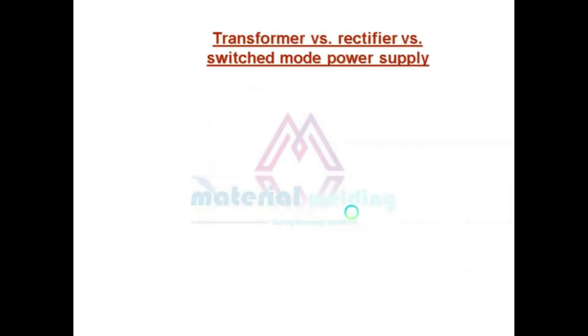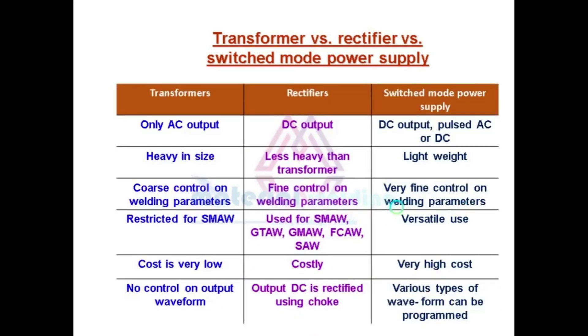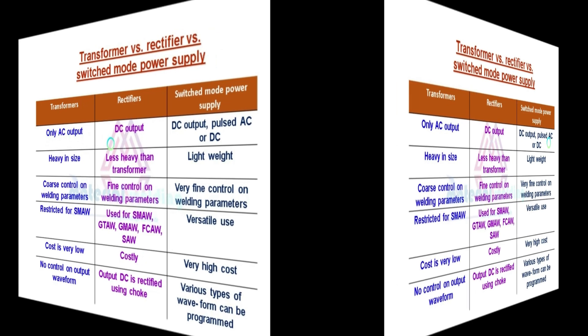Now let's compare three types of power sources. The table shows the main features and limitations of these power sources. If you see transformer, they have only AC output. Rectifier they have only DC output, and the switch mode they are versatile, they can give AC, DC, and different waveforms.